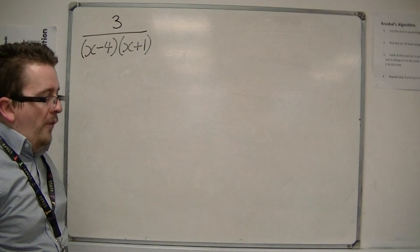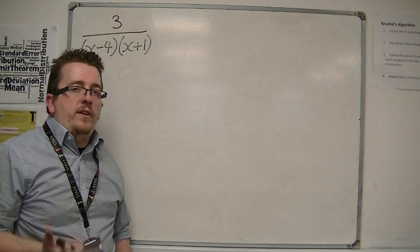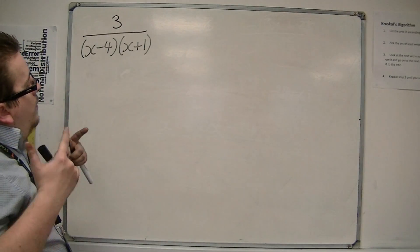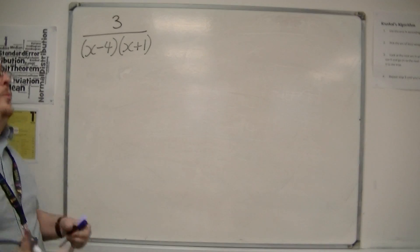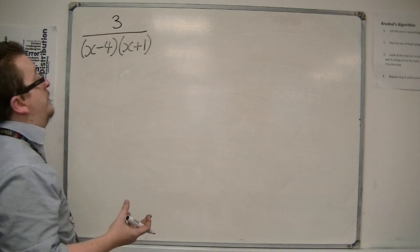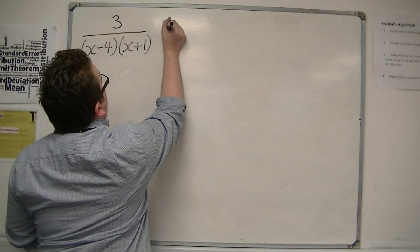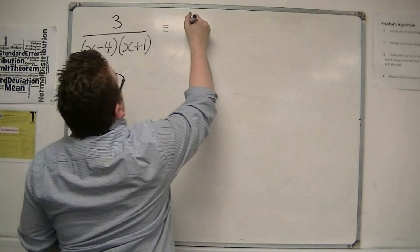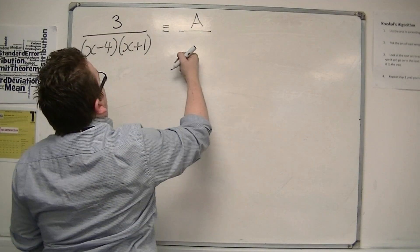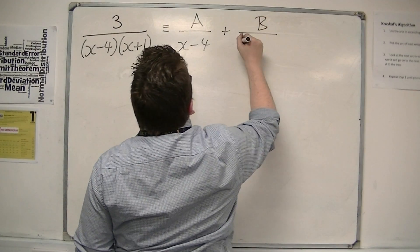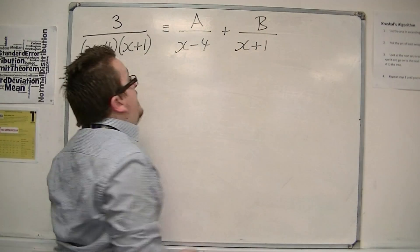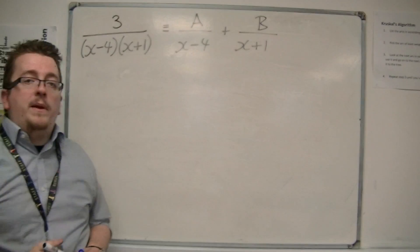But I still want to be able to write it in an equivalent form. What we can do is use something called partial fractions. We can write this as some number a over x minus 4 plus some number b over x plus 1. And I need to work out what that a and that b are.